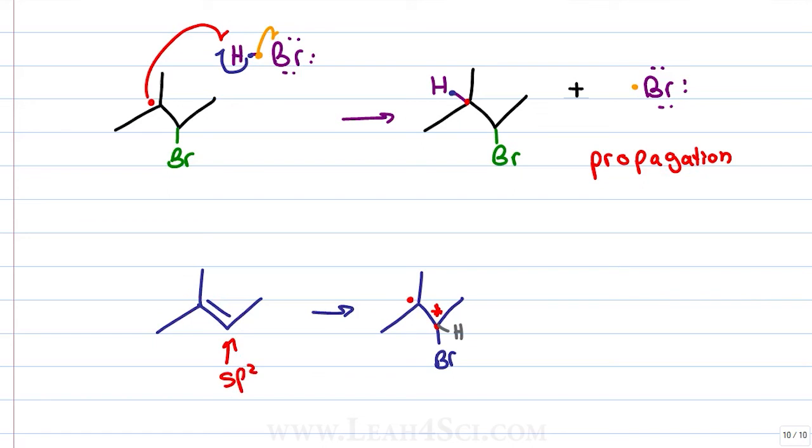But because we're starting with an alkene which means an sp2 carbon atom that is trigonal planar or flat, bromine can attack from the top or the bottom so that if the final product is chiral, we get a racemic mixture with 50% R and 50% S.